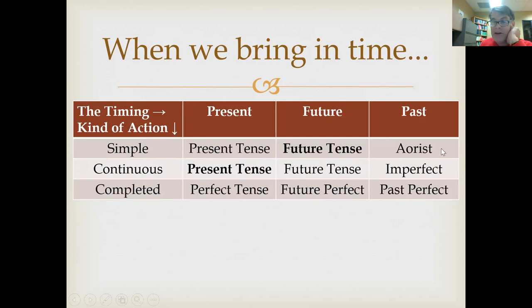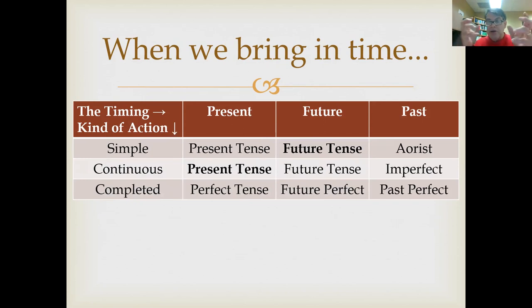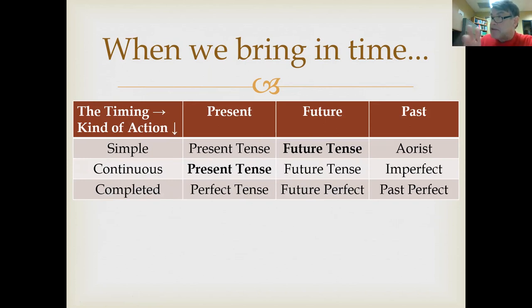In the past tense, here's where it gets interesting. There are two different past tenses. If you simply want to say it happened, you use the aorist: he died, Jesus wept — it doesn't say how long he was weeping. If you wanted to say that Jesus was weeping for 20 minutes, you would use the imperfect tense. The imperfect tense in Greek is past continuous action. You can talk about the same event using two different tenses and focus on two different aspects.